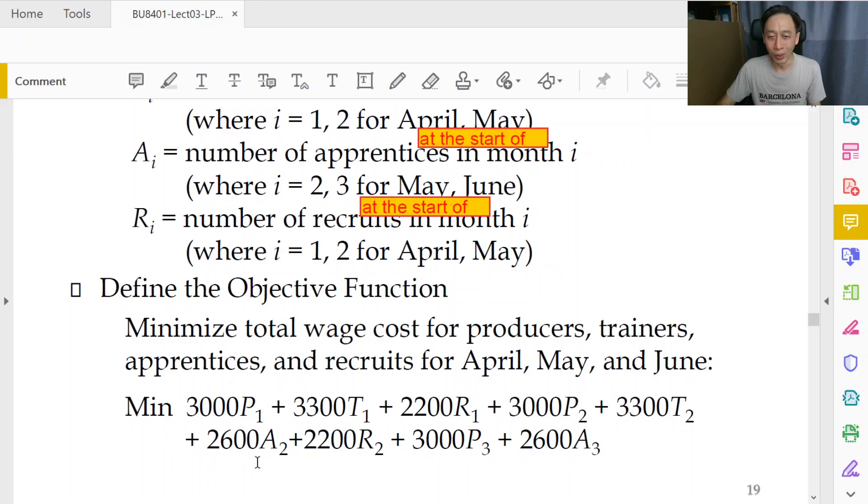For the part on wages, the total wage cost is very simple. Whenever we see a P we multiply by 3000 because production workers are paid the same for the three months at the same rate. The moment we see a T, 3003, and moment we see an R, 2002, or moment we see an A, we have 2006. And we minimize the total costs.